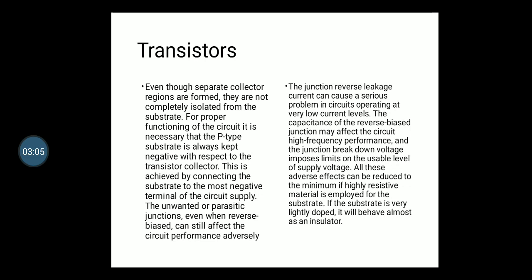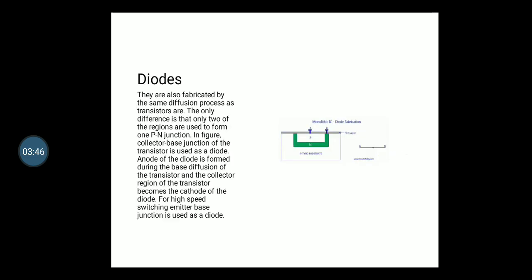The unwanted or parasitic junctions, even when reverse biased, can still affect the circuit performance adversely. A junction reverse leakage current can cause a serious problem in circuits operating at very low current levels. The capacitance of the reverse bias junction may affect the circuit high frequency performance, and the junction breakdown voltage imposes limits on the usable level of supply voltage. All these adverse effects can be reduced to the minimum if highly resistive material is employed for the substrate. If the substrate is very lightly doped, then it will behave mostly as an insulator.